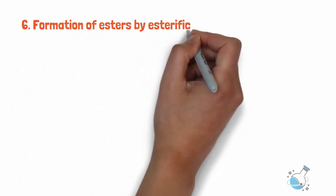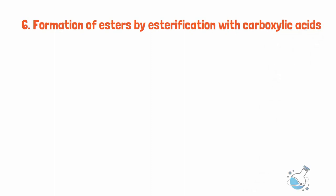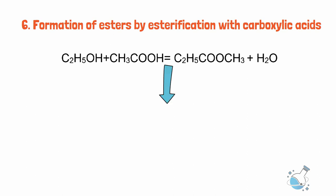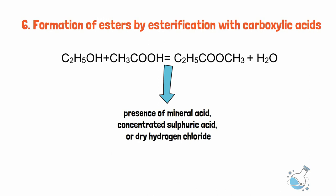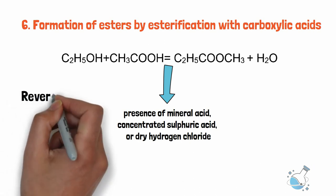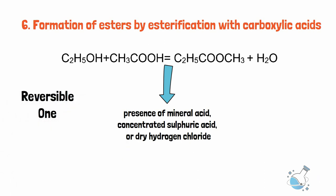Number 6. Formation of esters by esterification with carboxylic acids. Alcohol is converted directly into an ester when it is heated with a carboxylic acid in the presence of mineral acid, concentrated sulfuric acid, or dry hydrogen chloride. It should not be out of place to mention that this reaction is a reversible one.